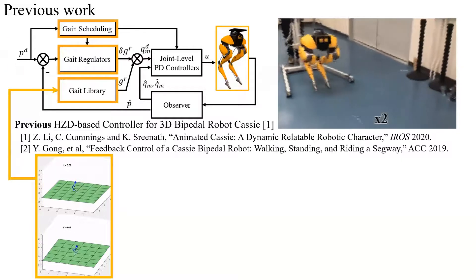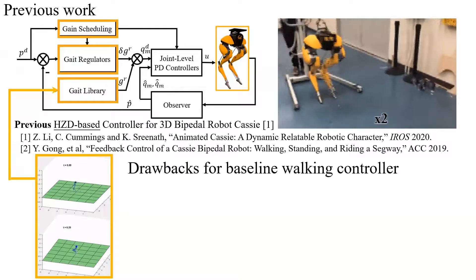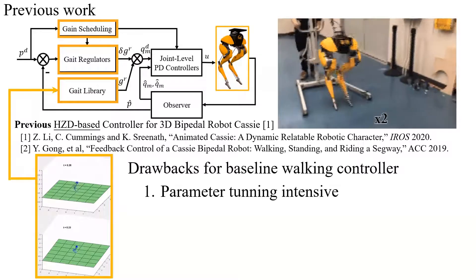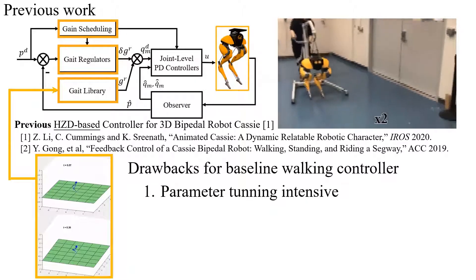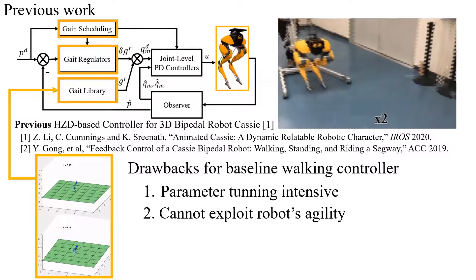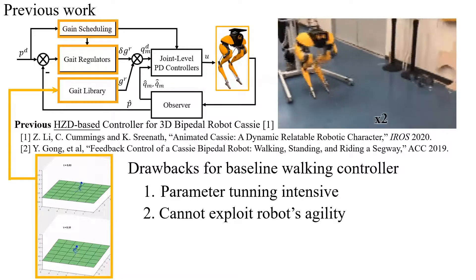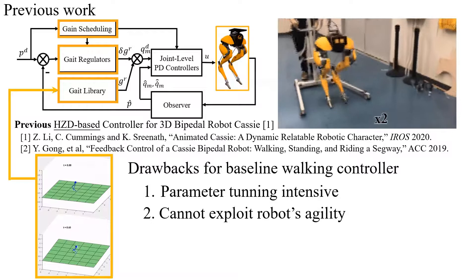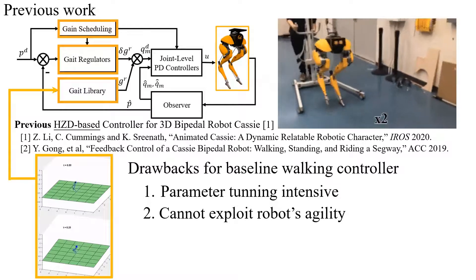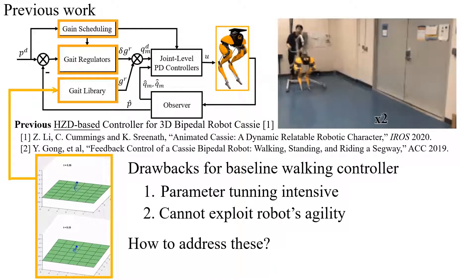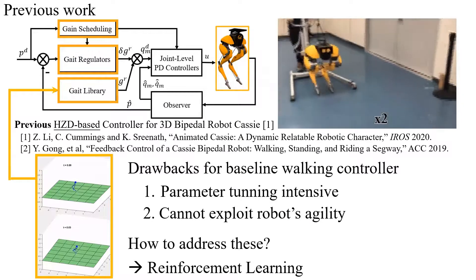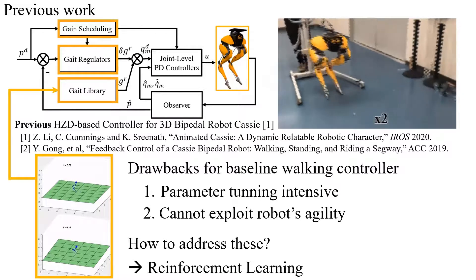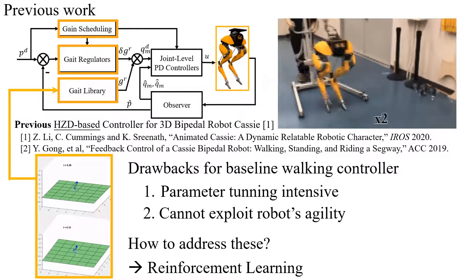As you can see, this controller requires lots of parameter tuning, not only in simulation but in the real world. Moreover, CASI is a highly nonlinear, high-dimensional system, and using PD-based gait regulators may not be sufficient, as this limits what the robot can do. To address these issues, we propose to use reinforcement learning that leverages the robot's full-order dynamics to obtain a nonlinear controller for CASI.